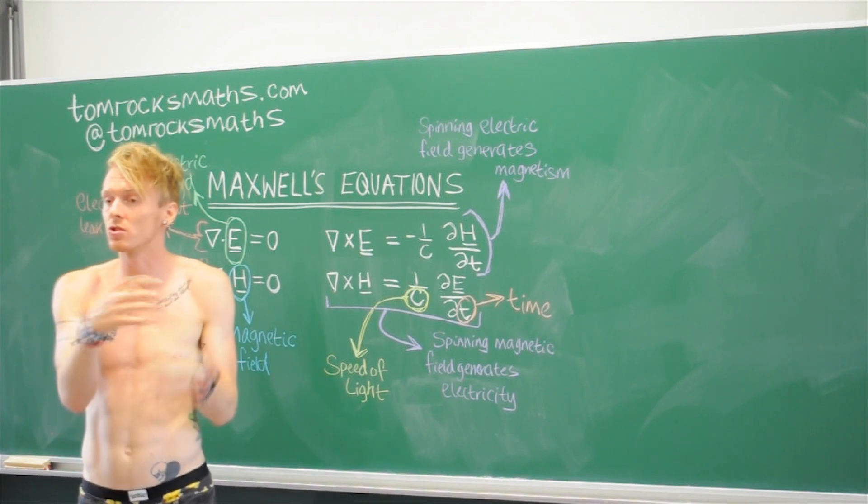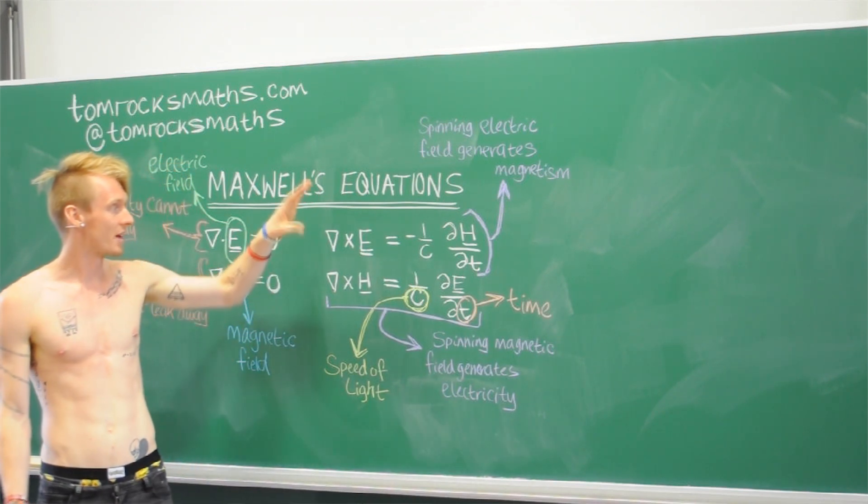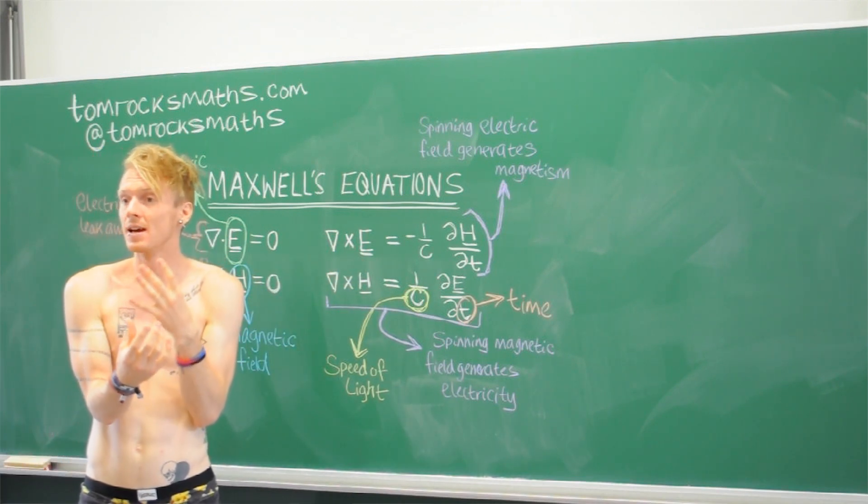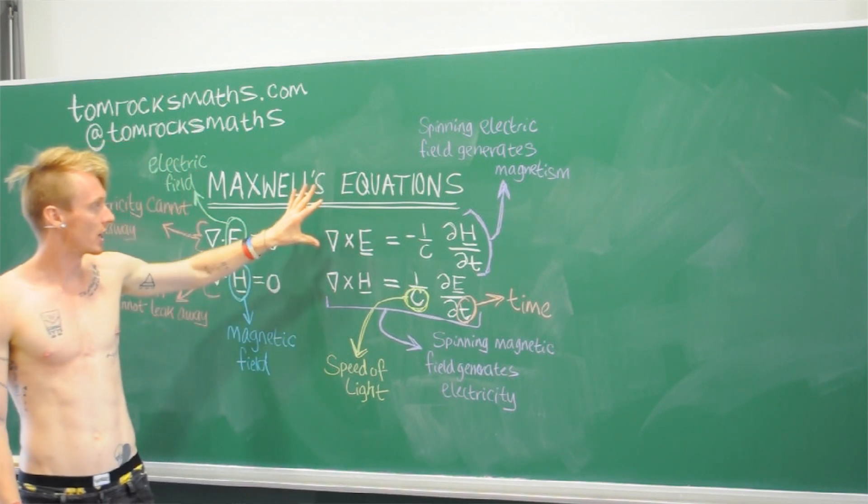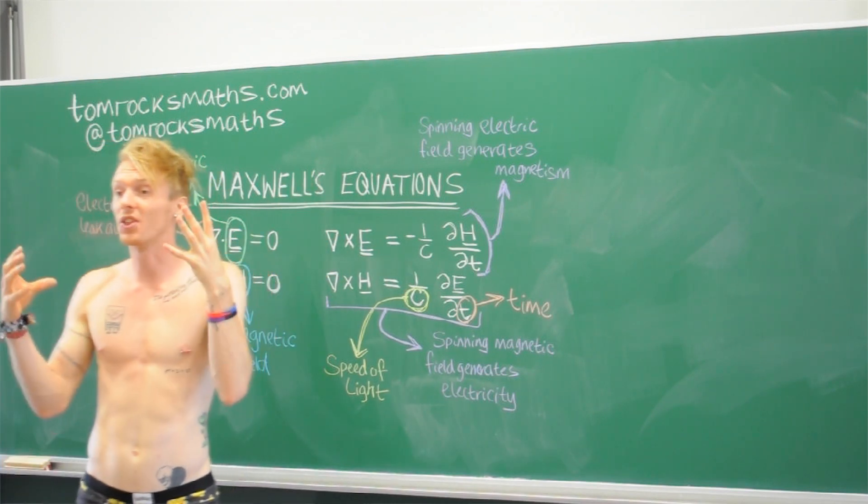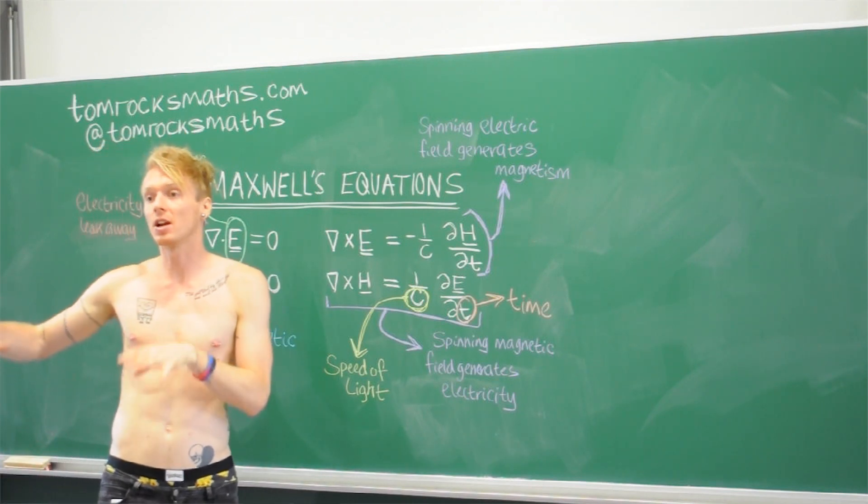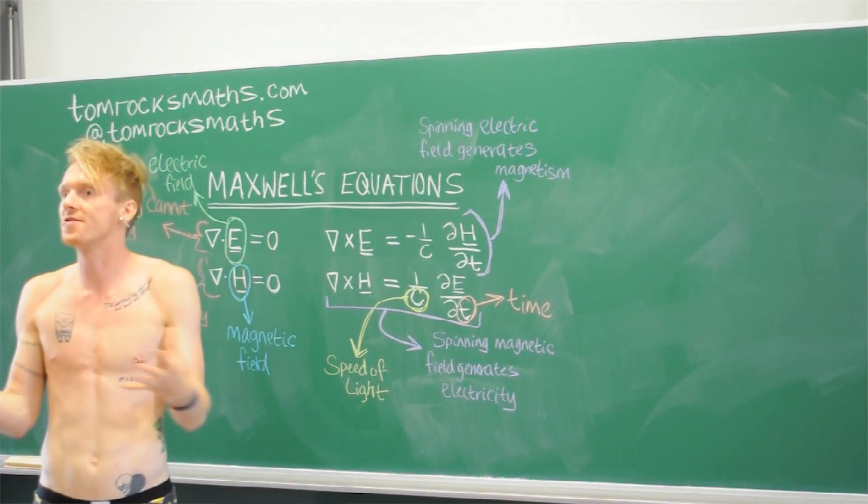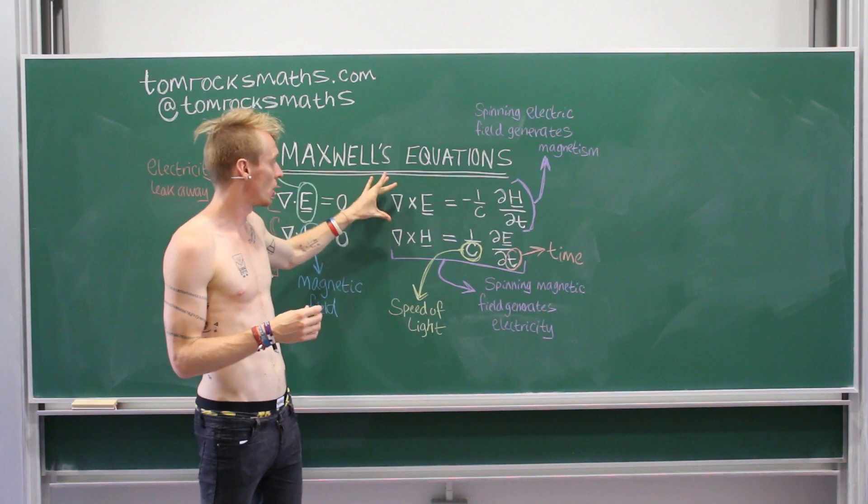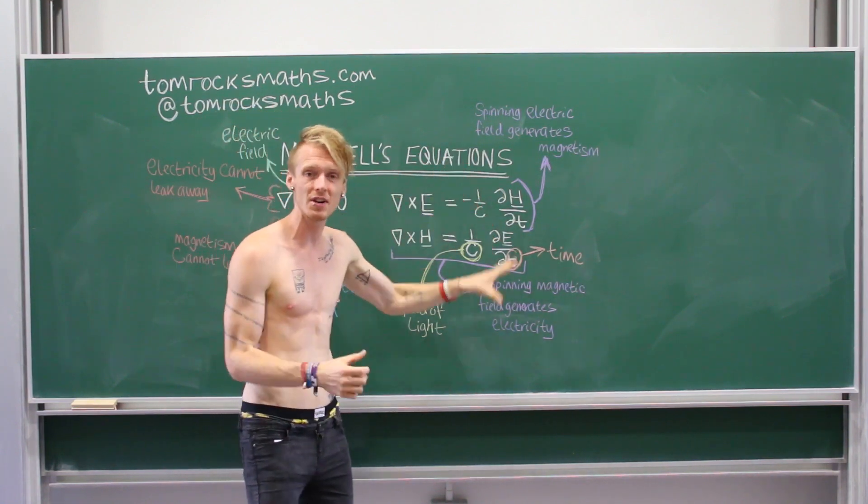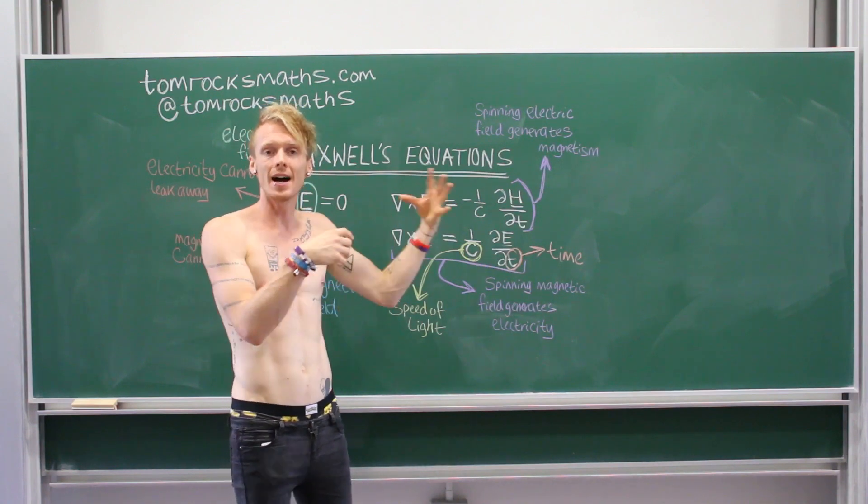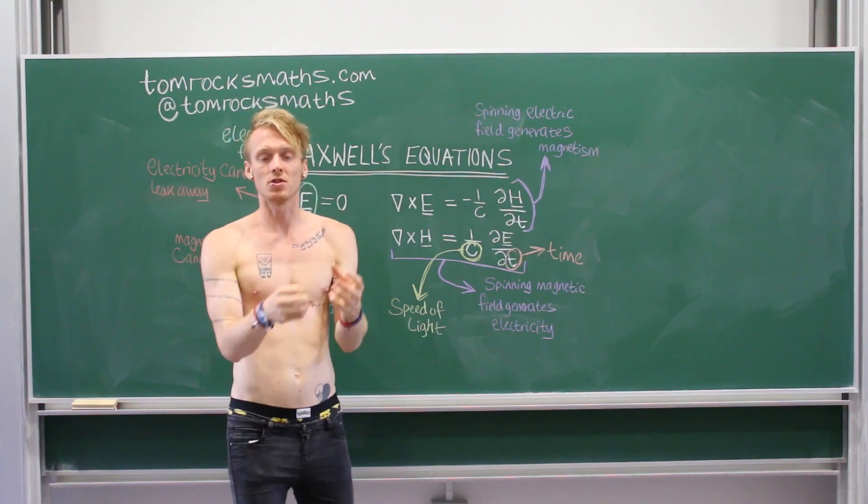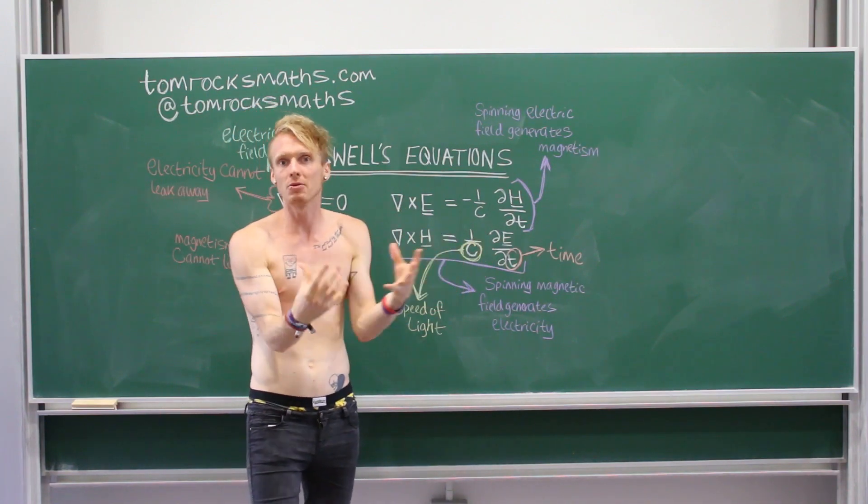For our second two equations, you'll notice there are lots of very similar terms. So, again, we have E for our electric field and H for our magnetic field. We also have the triangle operator again. So, upside down triangle with a cross instead of a dot, this is called the curl. So, again, it's a well-defined mathematical function. There are instructions that you follow that tell you how to take the curl of something. So, what the first equation is saying is the curl of your electric field is related to the time derivative of your magnetic field. The time derivative here is just saying, how does your magnetic field change over time? You have a magnetic field, you let some time pass, how does it change?